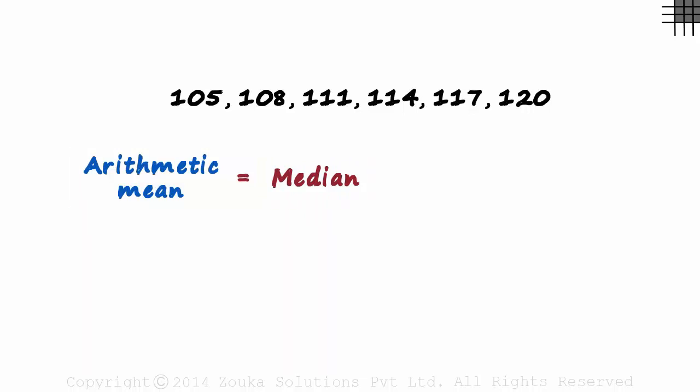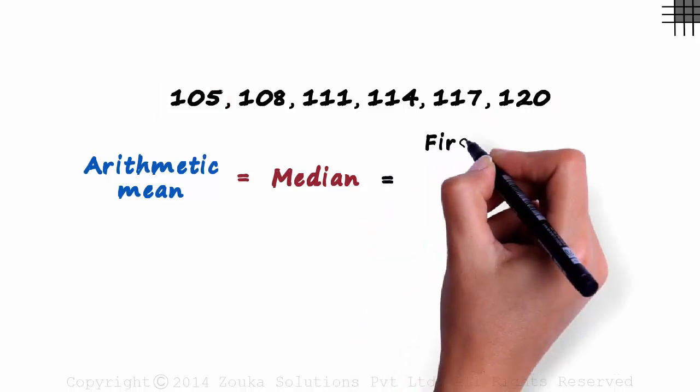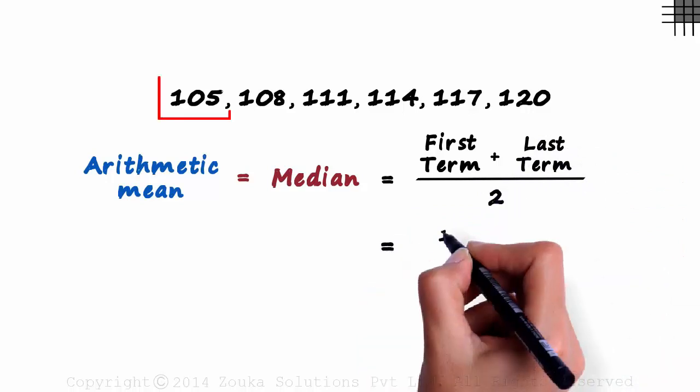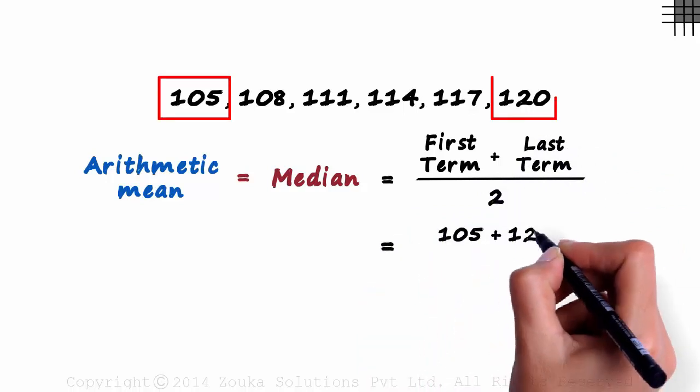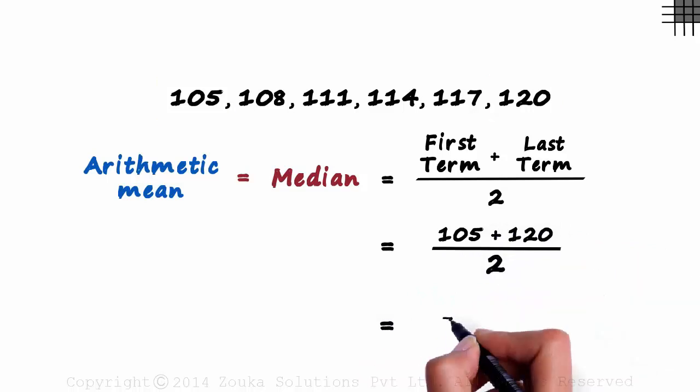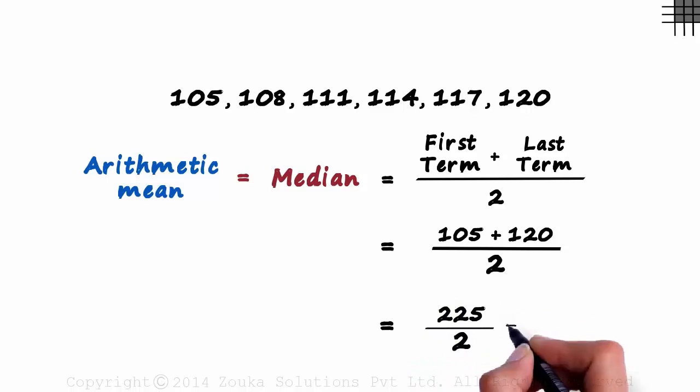But using the traditional technique of adding all terms would be a pain. Here's the trick. For evenly spaced numbers, both these values will equal the average of the first and the last terms. It's as simple as that. First term plus the last term divided by 2. It will be 105 plus 120 divided by 2, that will be 225 divided by 2 which equals 112.5.